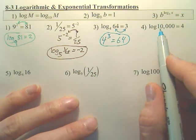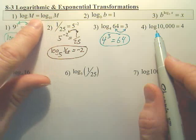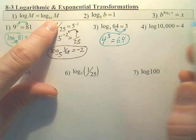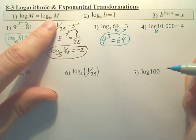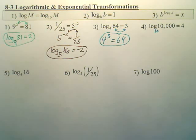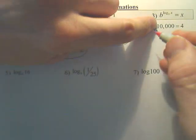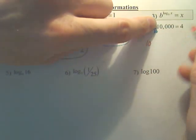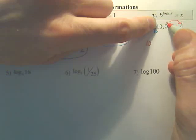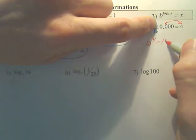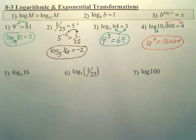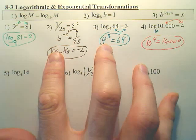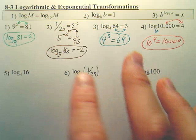For this one, we don't have a base. But what did we say? Actually, right here, what's the base if there isn't one? 10. So let's write a 10 in there. You just assume when there's no base, it's base 10. And then we go, okay, drop the log. So we have a 10, and then switch these two. Switch the 4 and the 10,000. And 10 to the fourth is 10,000. So one part of the homework, you're going to take logs and switch them to exponents. Take exponents and switch them to logs.